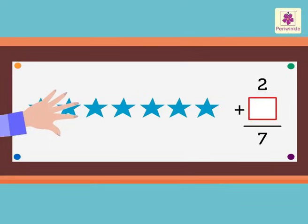We can see five stars. Thus, the missing addend is five. Two plus five is equal to seven.